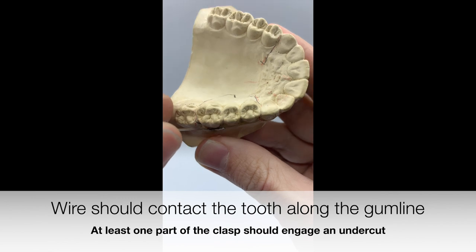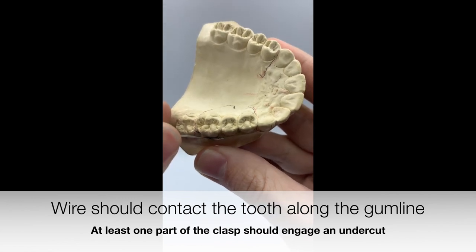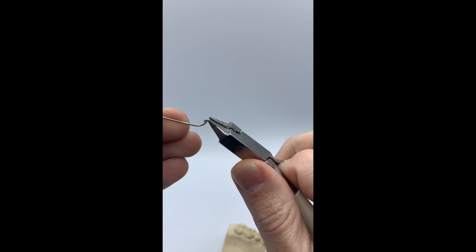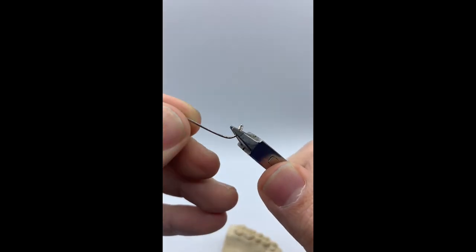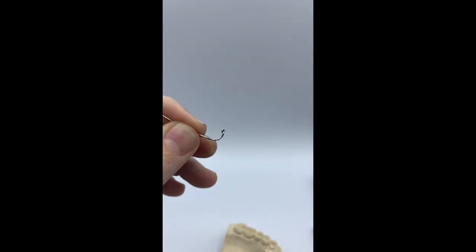You want to make sure the wire touches the tooth throughout the entire buccal surface. If you need to adjust, you can use your 139 plier or also the 3 prong plier to get that better arch.